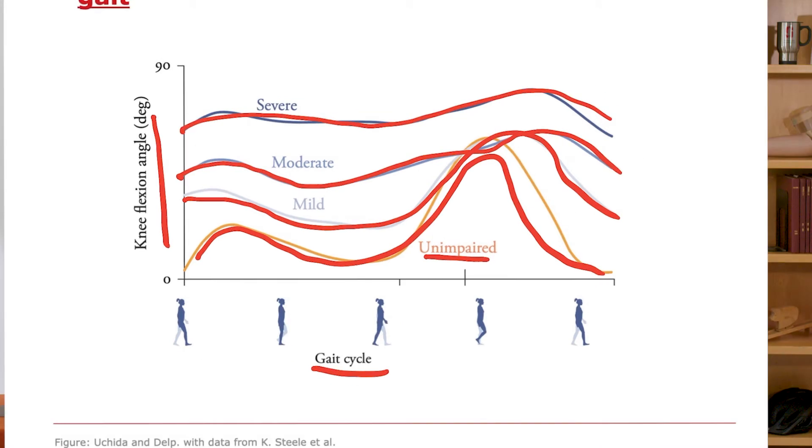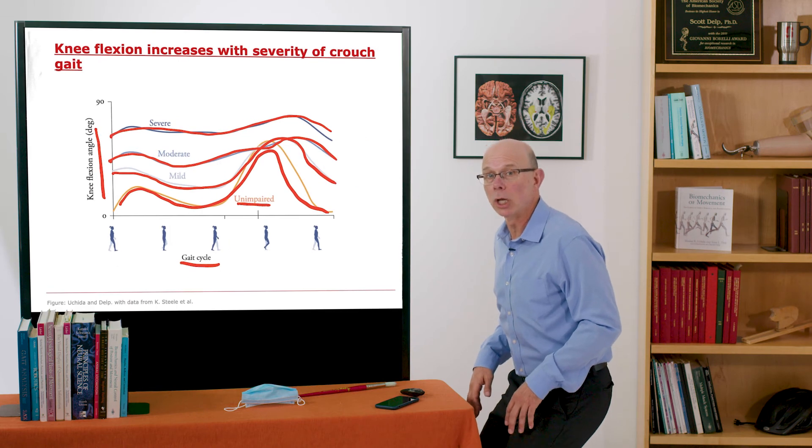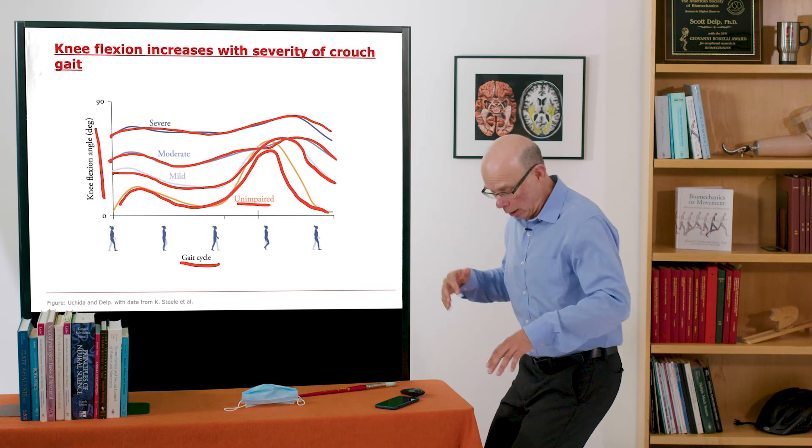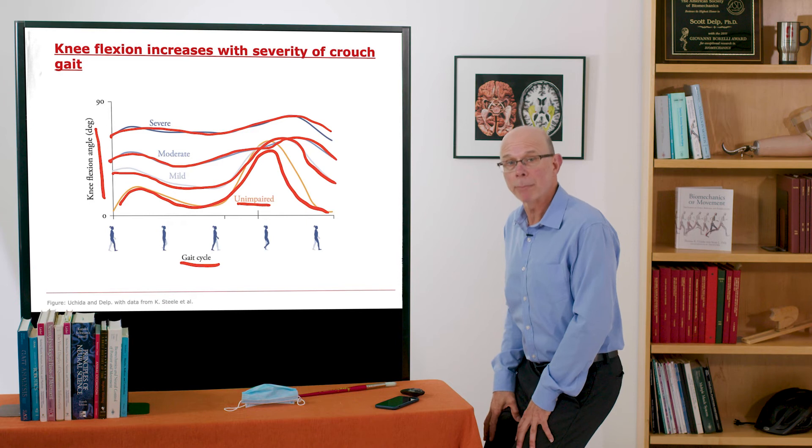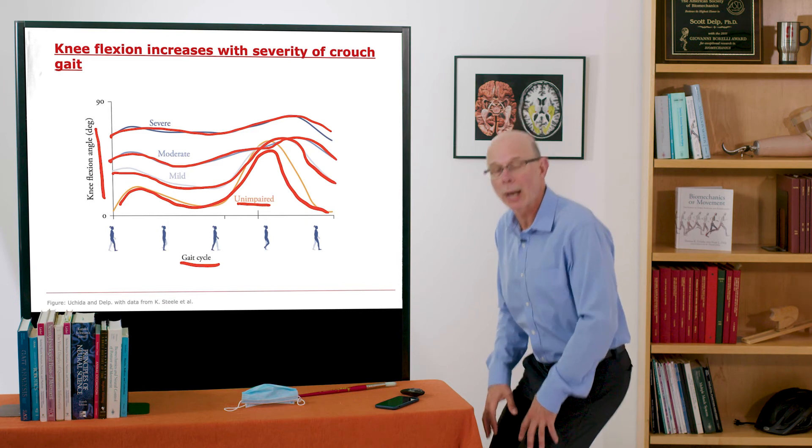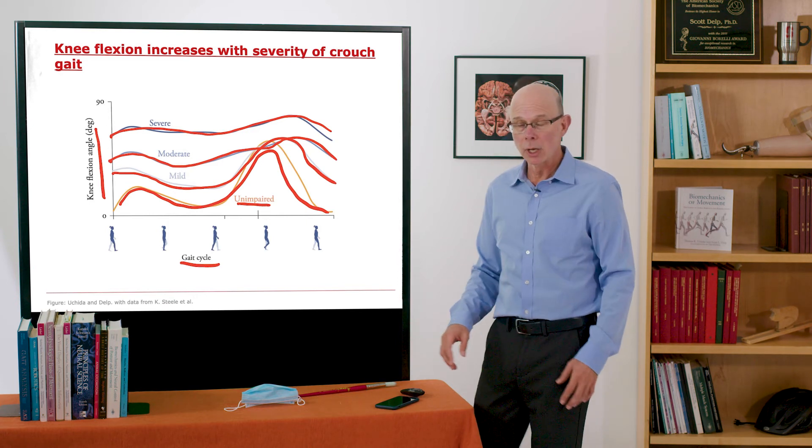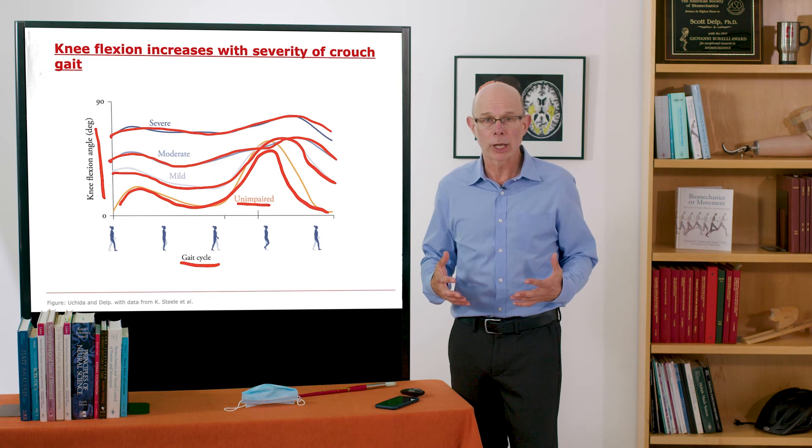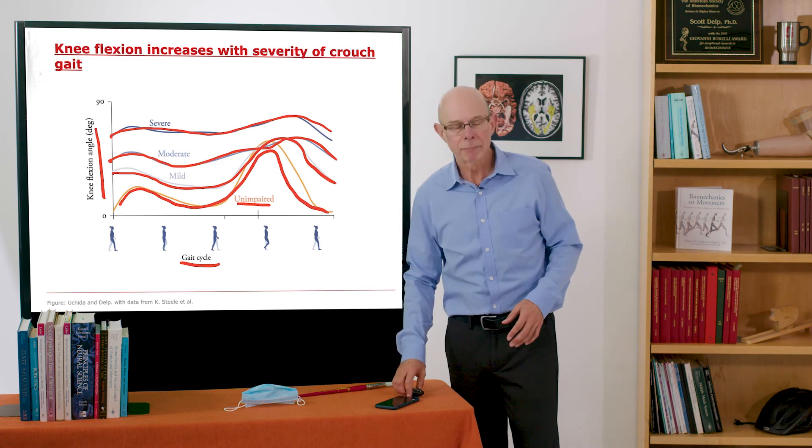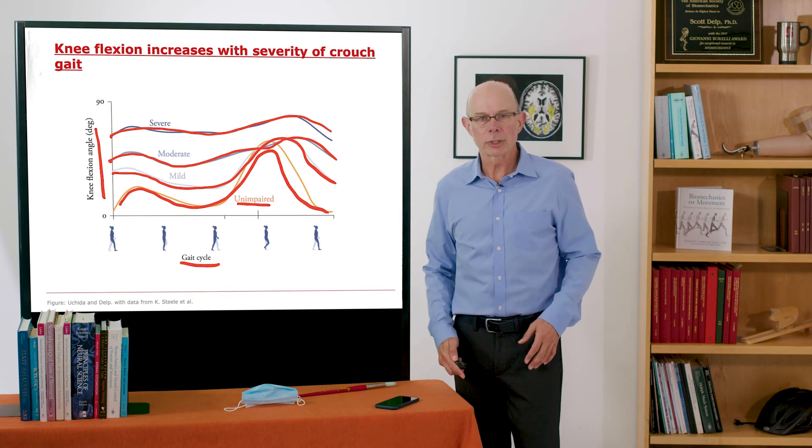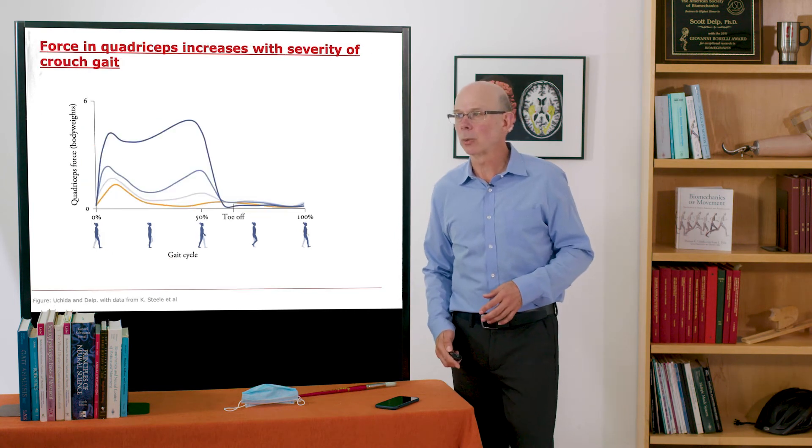Moderate and severe, you have more knee flexion during the stance phase. So you never straighten your leg. You really flex down at a pretty low level. You lose height and the question is what happens to forces in your quadriceps? What happens to forces in your knee joints? Why is it costing so much energy and why do your joints hurt? You can use a muscle-driven simulation to get answers to those questions.